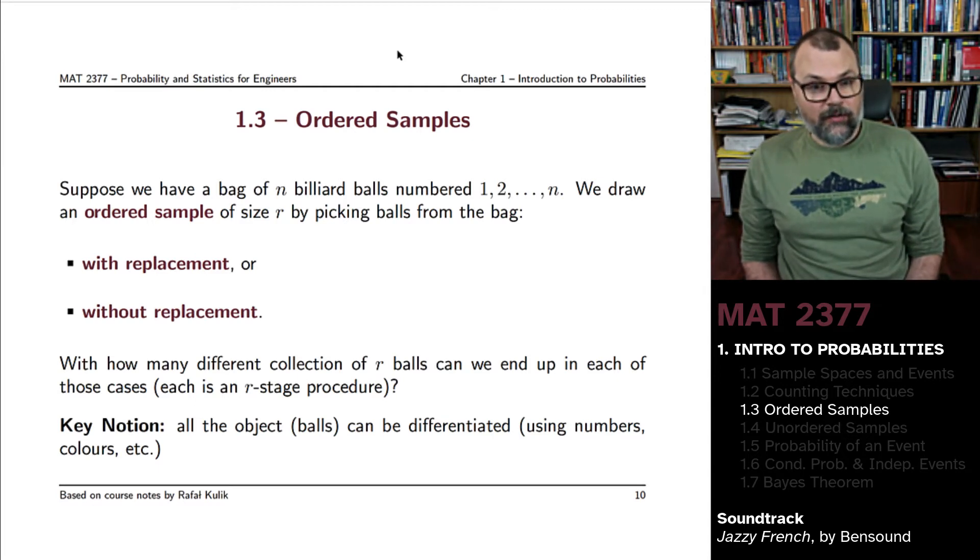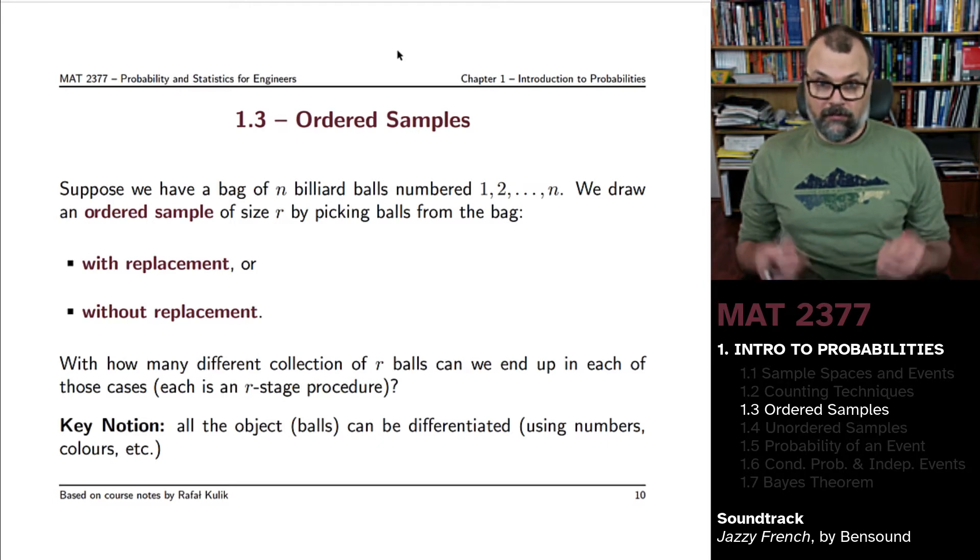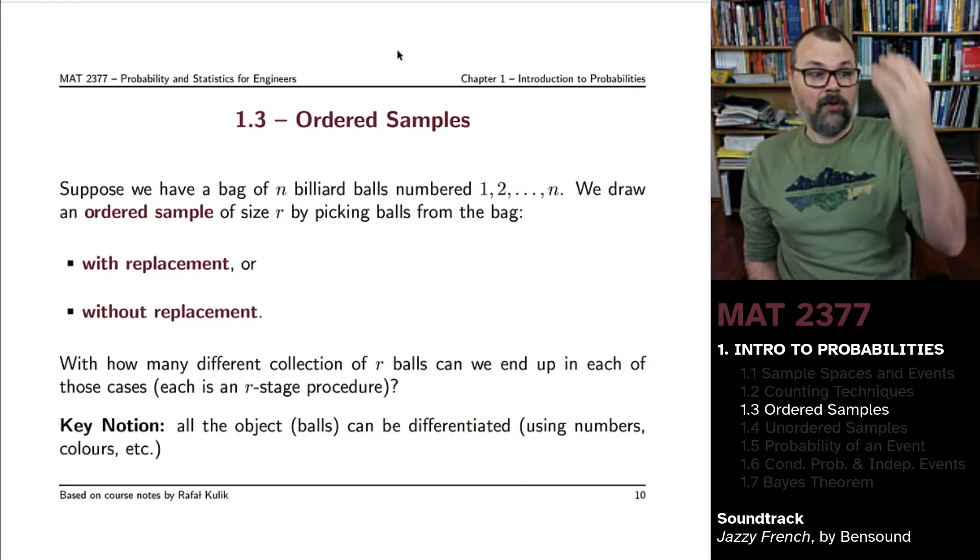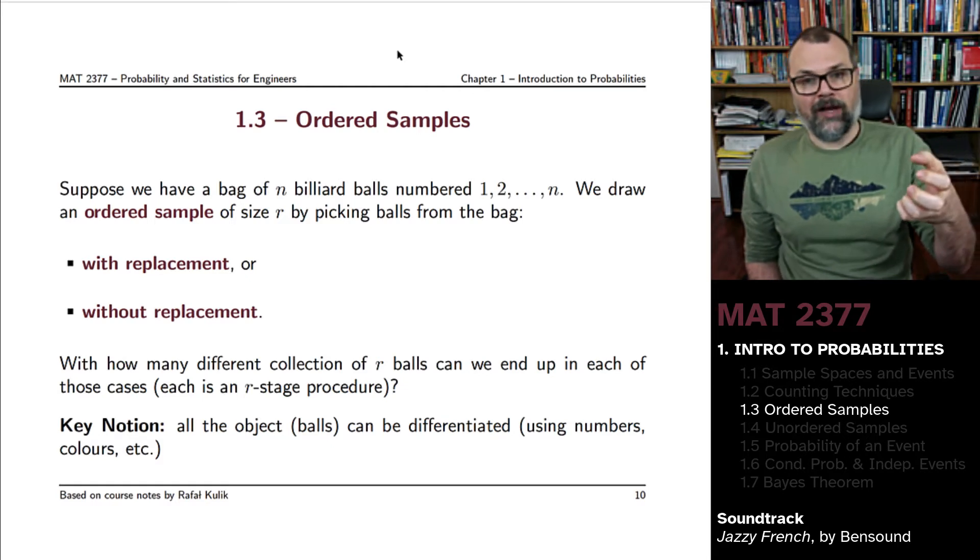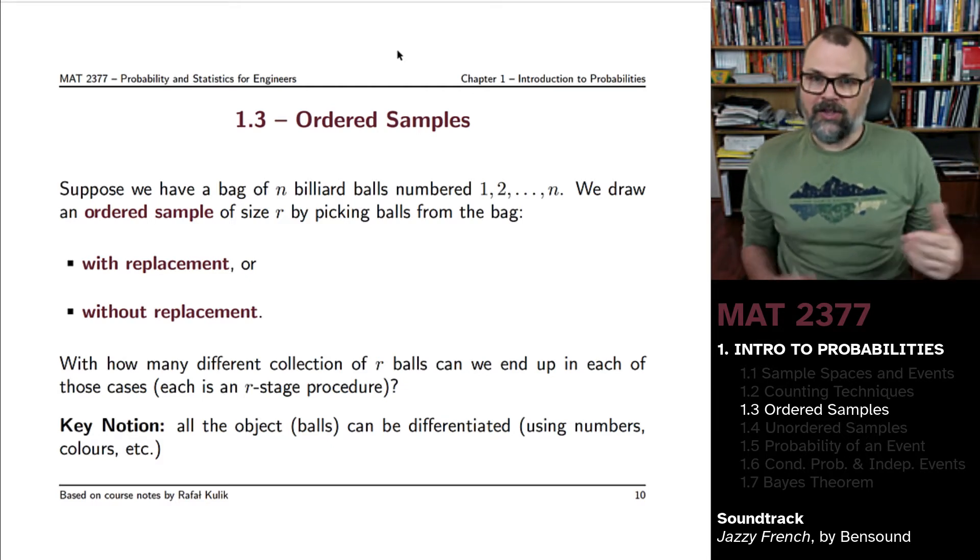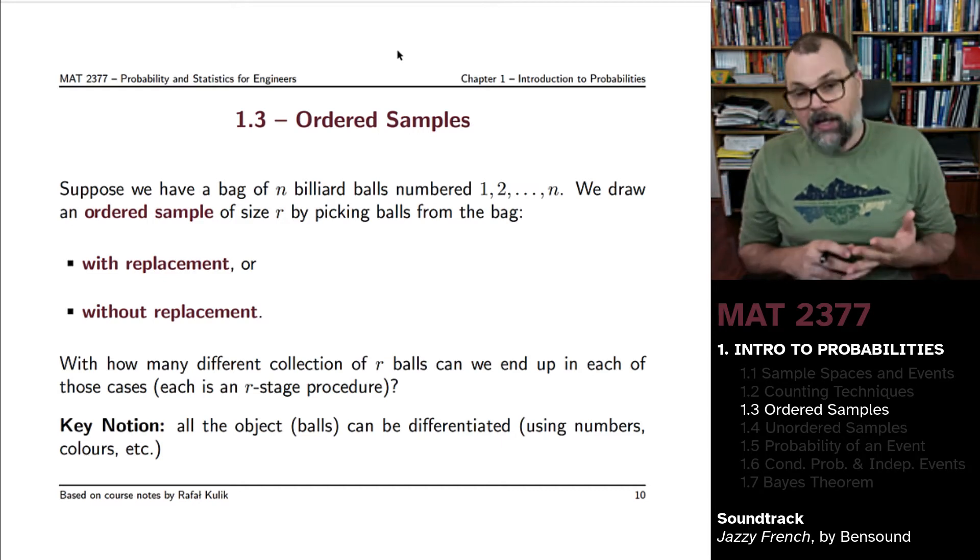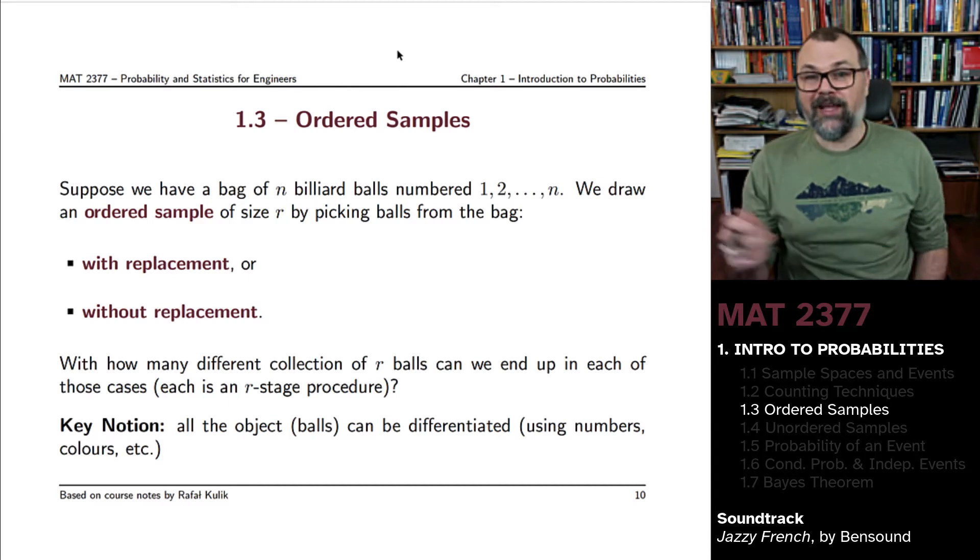One of the very important notions is that all of the objects, the balls in your bag of pool balls, they can be differentiated. It is easy to tell which ball you picked. You're not drawing a ball, you're drawing a specific ball and you differentiate them with the help of many features. We can assume that they're numbered, that they might have a different color or a different painting pattern.